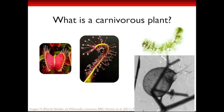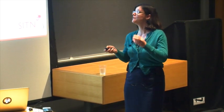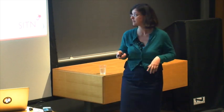Another type of trap is something like the sundews. These are called flypaper traps because they're very sticky. They have very sticky secretions that are also sweet and sugary. They attract insects who then come to feed on them and are stuck — trapped like flypaper. Then the plant will slowly curl around them and digest them with digestive enzymes.